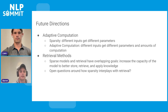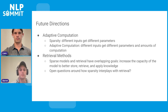Two future directions we're both very excited about: One is adaptive computation. Sparsity gives different inputs different subsets of parameters by routing to different expert layers. With adaptive computation, different inputs can get different parameters and different amounts of computation — a very promising direction that is very additive with current sparse methods. Another area we're interested in is how sparsity interplays with retrieval methods. Sparse models and retrieval have very overlapping goals: increasing model capacity to better store, retrieve, and apply knowledge. There are still open questions on how to best combine both methods.